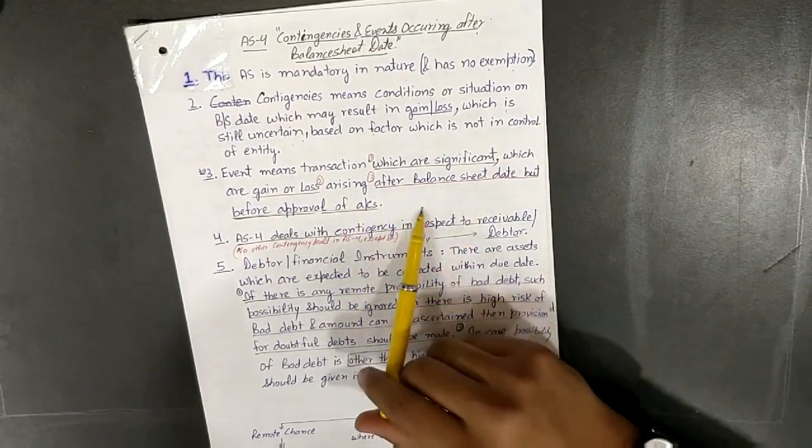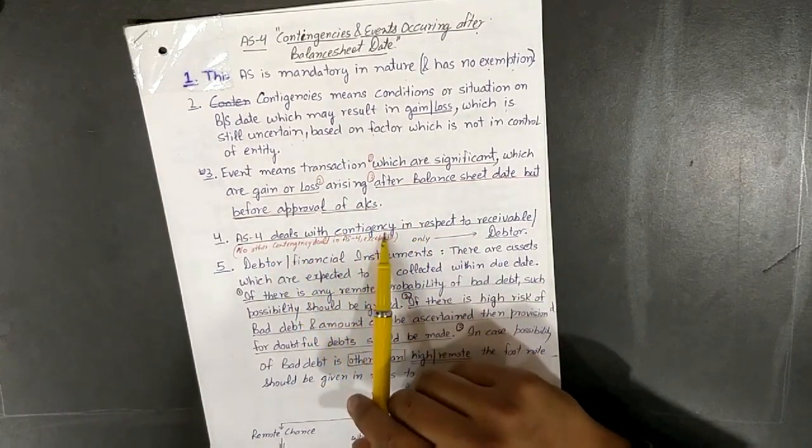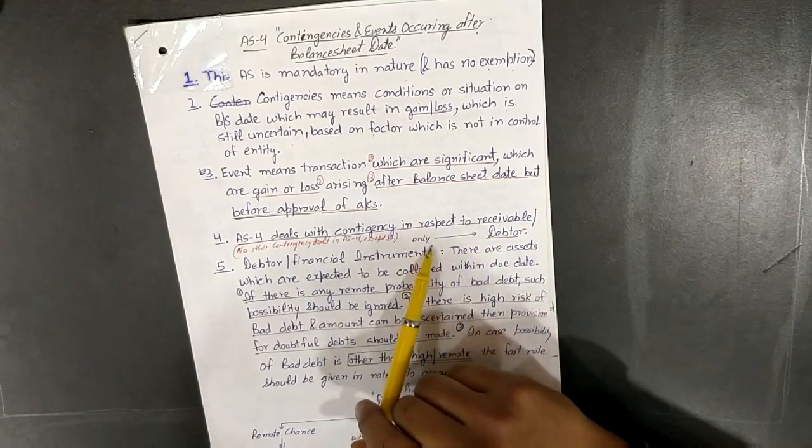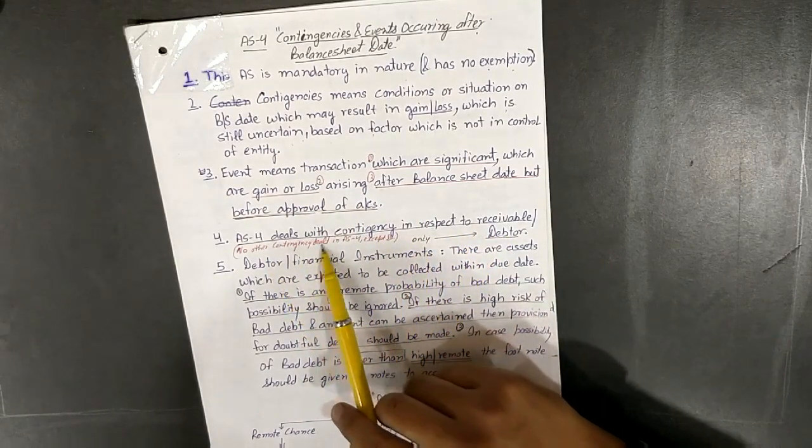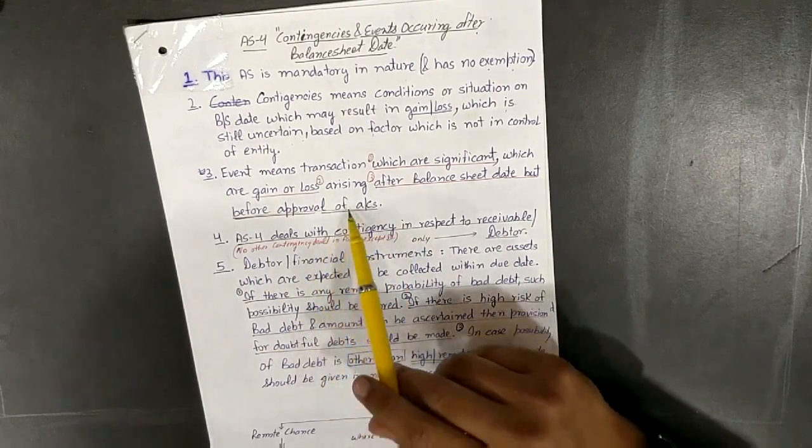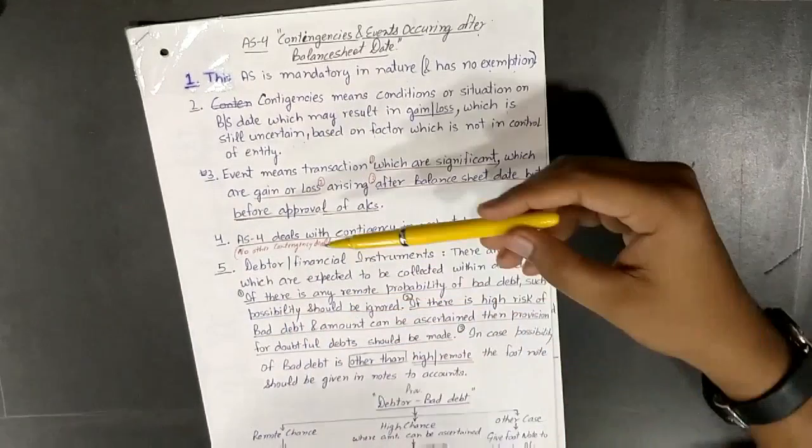AS4 deals with contingencies in respect of receivables or debtors only. Other contingencies except debtors are covered in AS number 29.